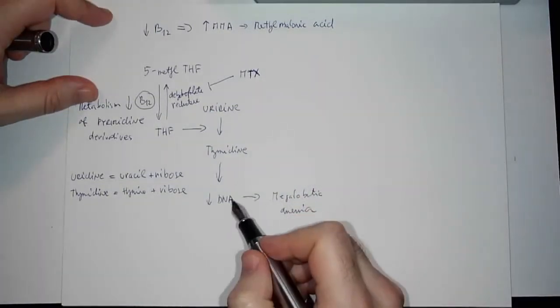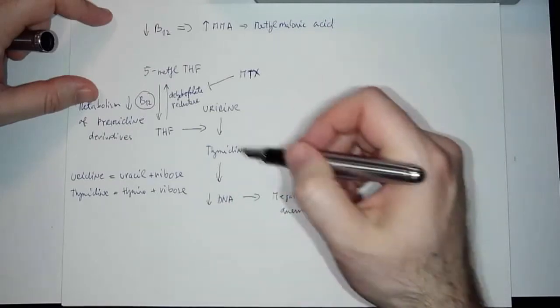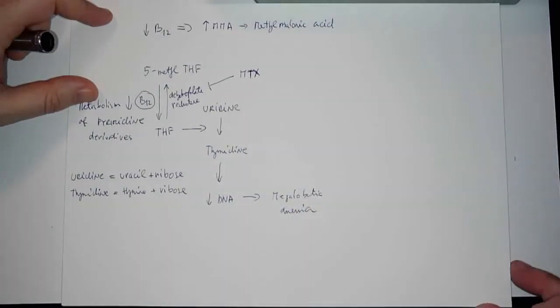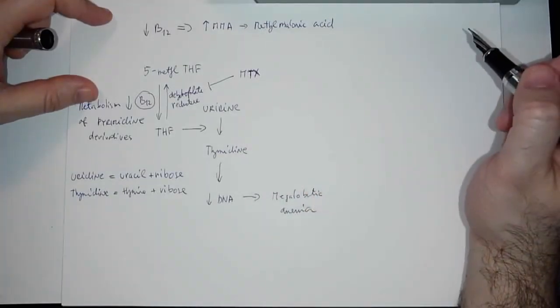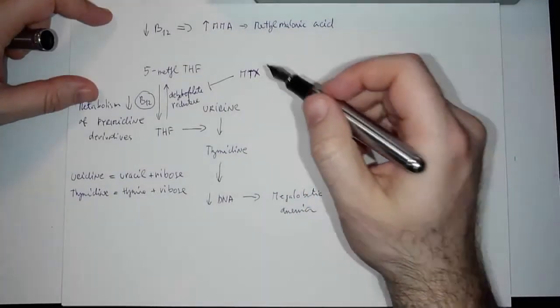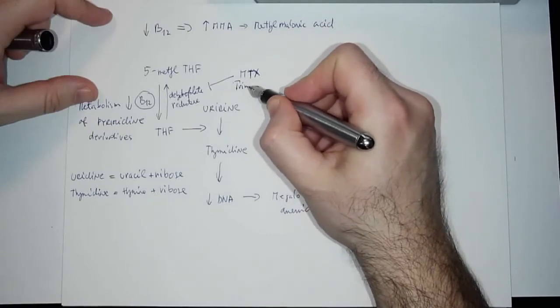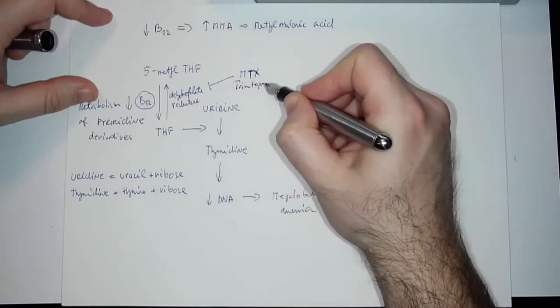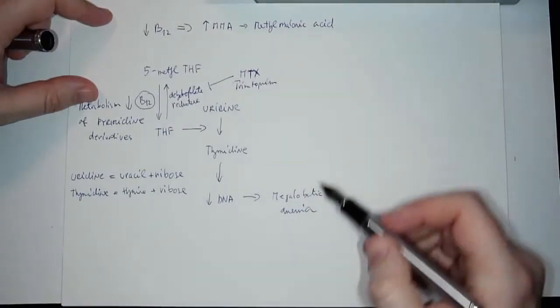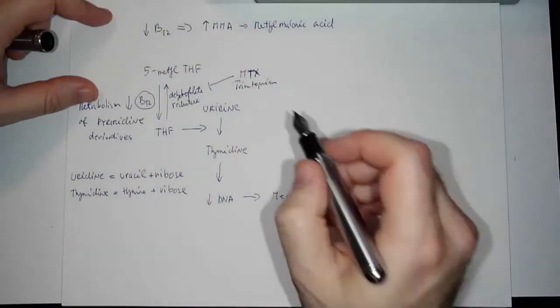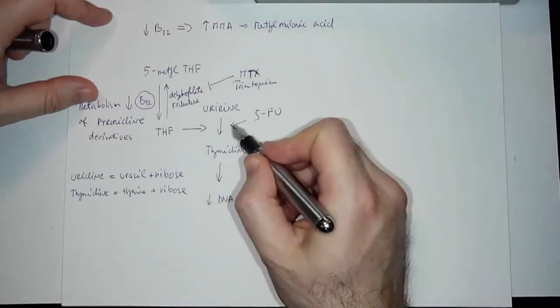Methotrexate blocks the production of DNA, so this works on malignant cells. Methotrexate is also used in rheumatoid arthritis. Don't forget that some antibiotics like trimethoprim can also cause this. Methotrexate can cause megaloblastic anemia, and don't forget 5-fluorouracil which blocks it here as well.